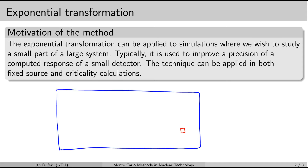The aim of the Exponential Transform method is to change the sampling rules for the neutron transport simulation in such a way that neutron histories will be more likely to end up in the small volume of the detector. Every time we change the rules for sampling any random variables during the simulation, we need to compensate by adjusting the neutron statistical weight.